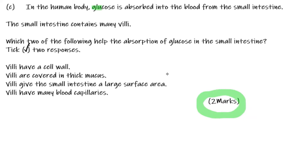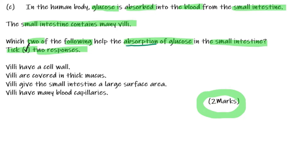In the human body, glucose is absorbed into the blood from the small intestines. The small intestines contain villi. Which two of the following help the absorption of glucose in the small intestines? Recap from previous videos: when we looked at absorption, think about large surface area to volume ratio — the villi give the small intestines this.